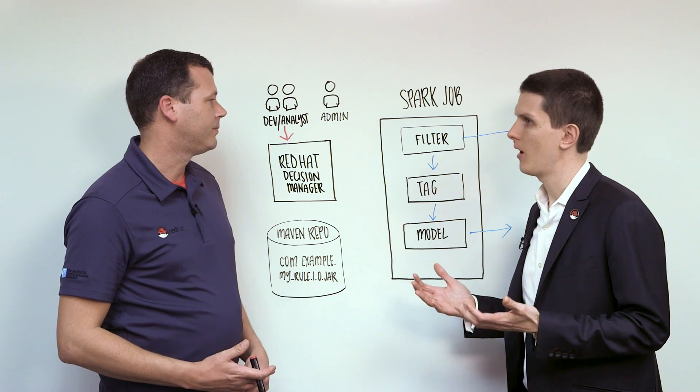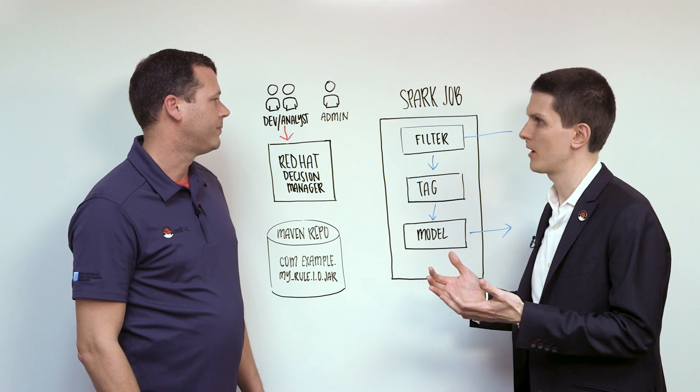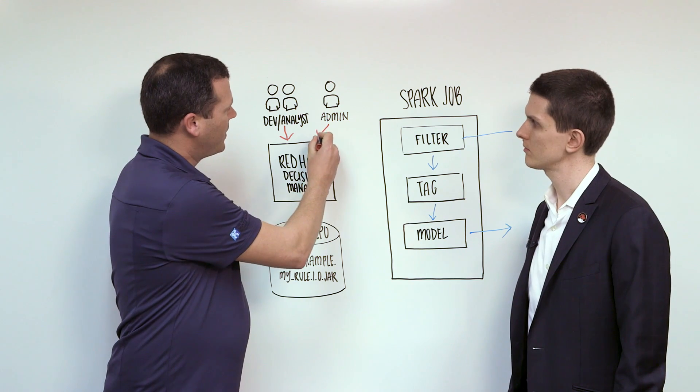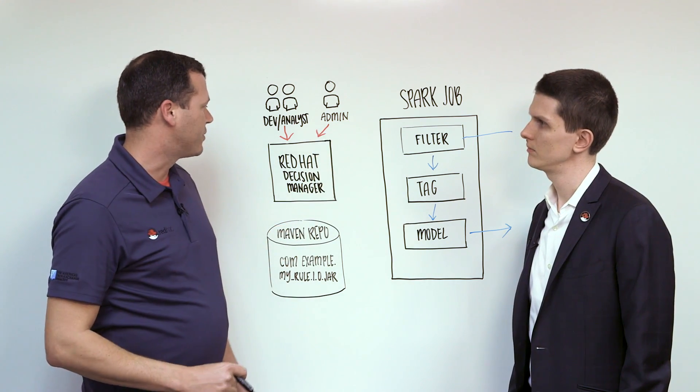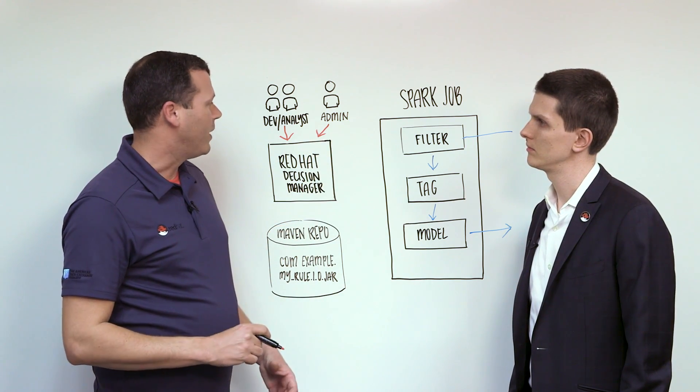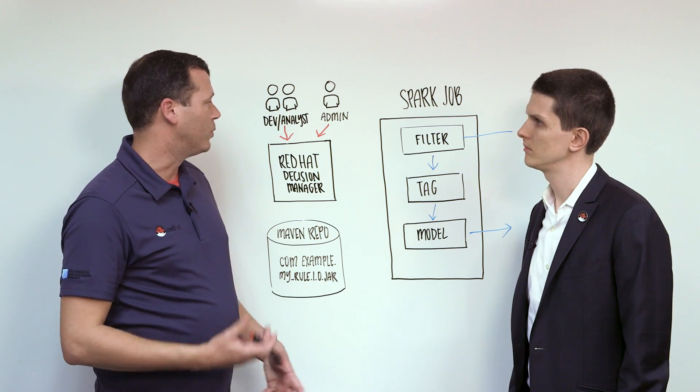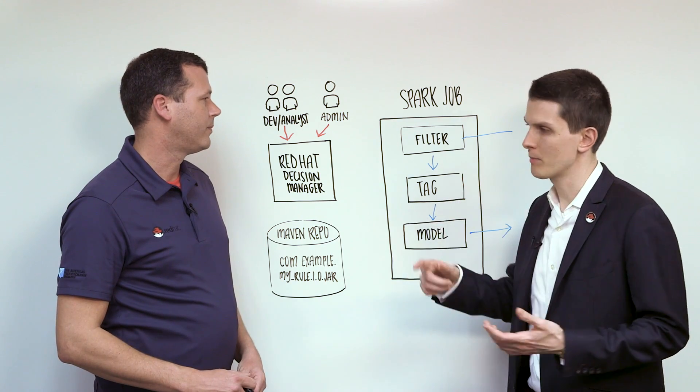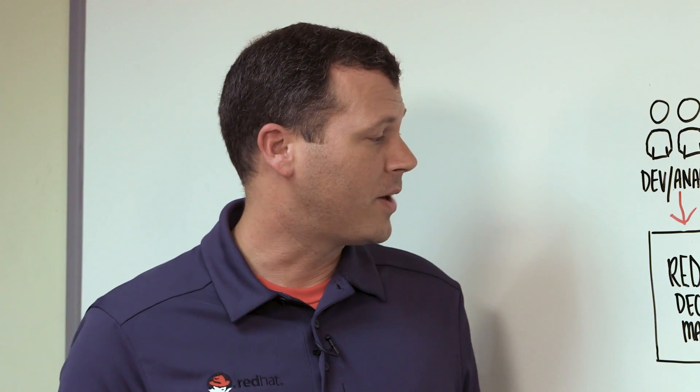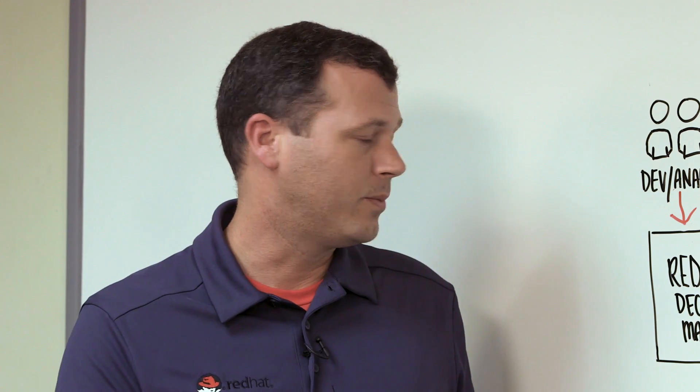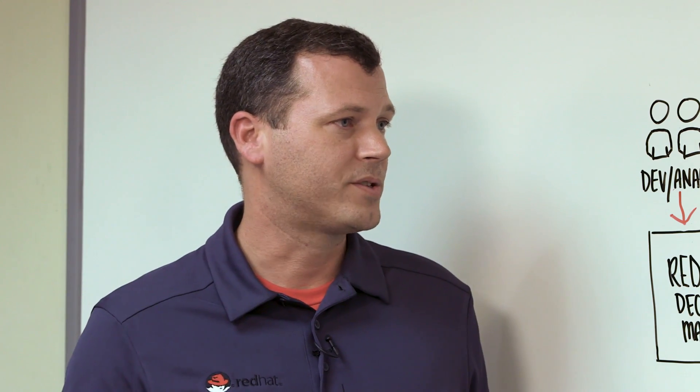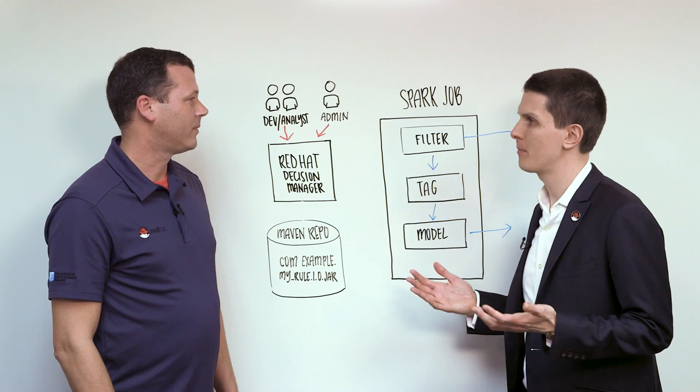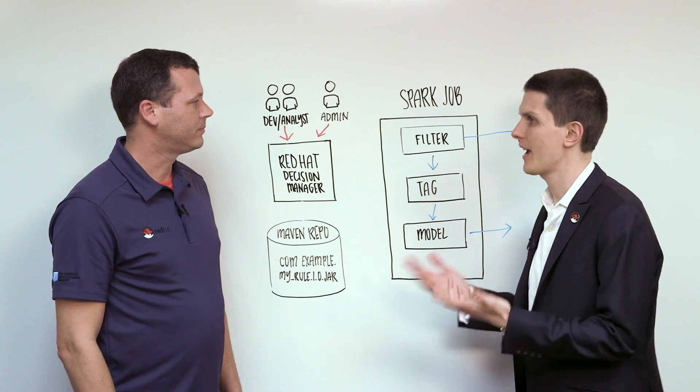So then once we have all of our rules built, how do we get them in a place where our Spark job can actually use them? Typically your administrator will come in to Red Hat Decision Manager and they will build and deploy the rules after all your tests pass. So is that like a command line based process? Is there a magic UI button they can push? There actually is a button within the web-based UI. Plus there's also a REST API available for you. So once the admin pushes the magic button in the UI to build those resources, where do they actually go?